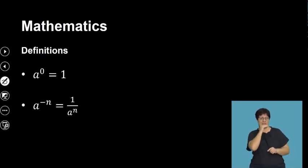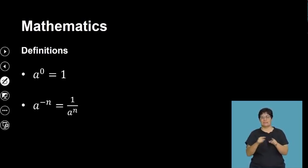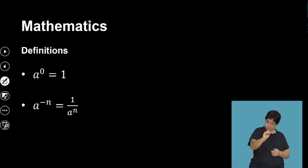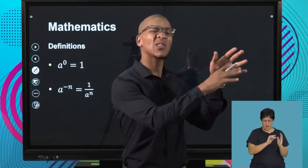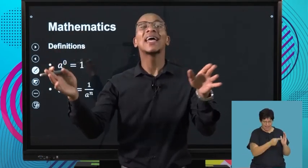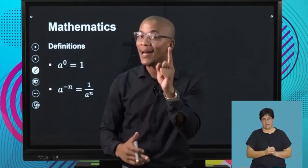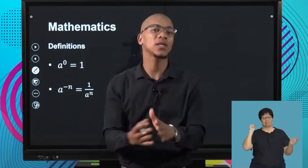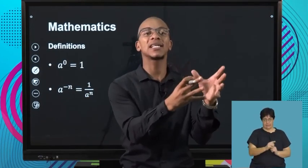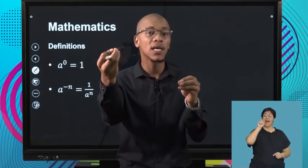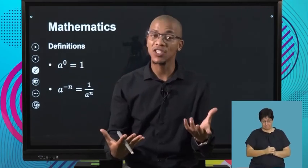We also have some definitions. The first definition is: a raised to an exponent of 0 equals 1. It does not matter what you have — if you open a bracket, write a whole lot of numbers and variables inside, close it and raise it to 0, everything there just becomes 1. A million raised to 0 is 1. A thousand raised to 0 is 1. As long as it is raised to an exponent of 0, it will forever be 1.